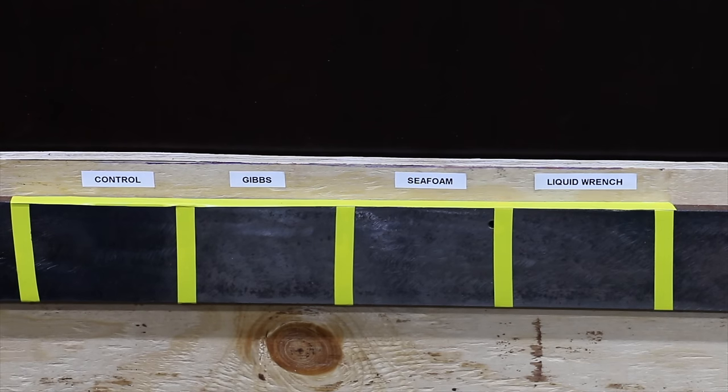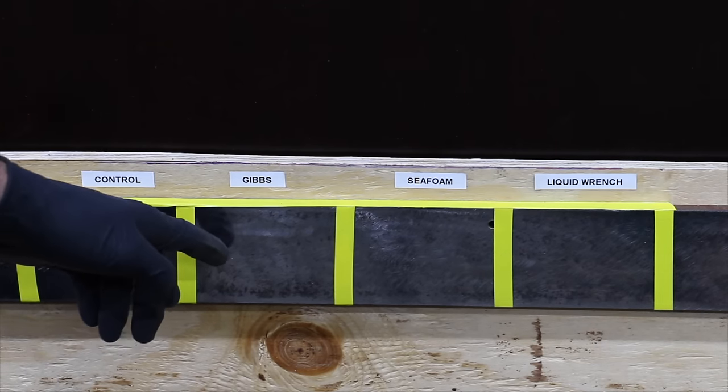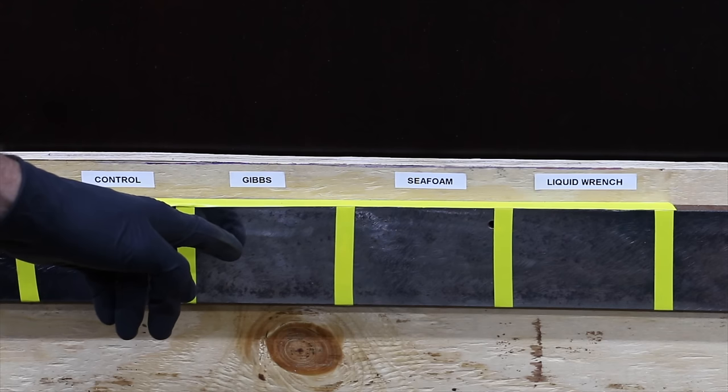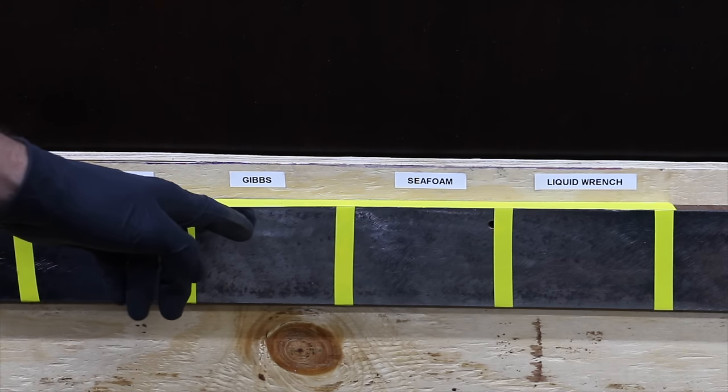In the next test, we're going to measure the ability of these products to prevent corrosion. I'll apply a generous dose of each penetrating oil on each metal strip, and then we'll begin applying a hydrogen peroxide vinegar and salt mix several times over the next 24 hours to see how much corrosion occurs.